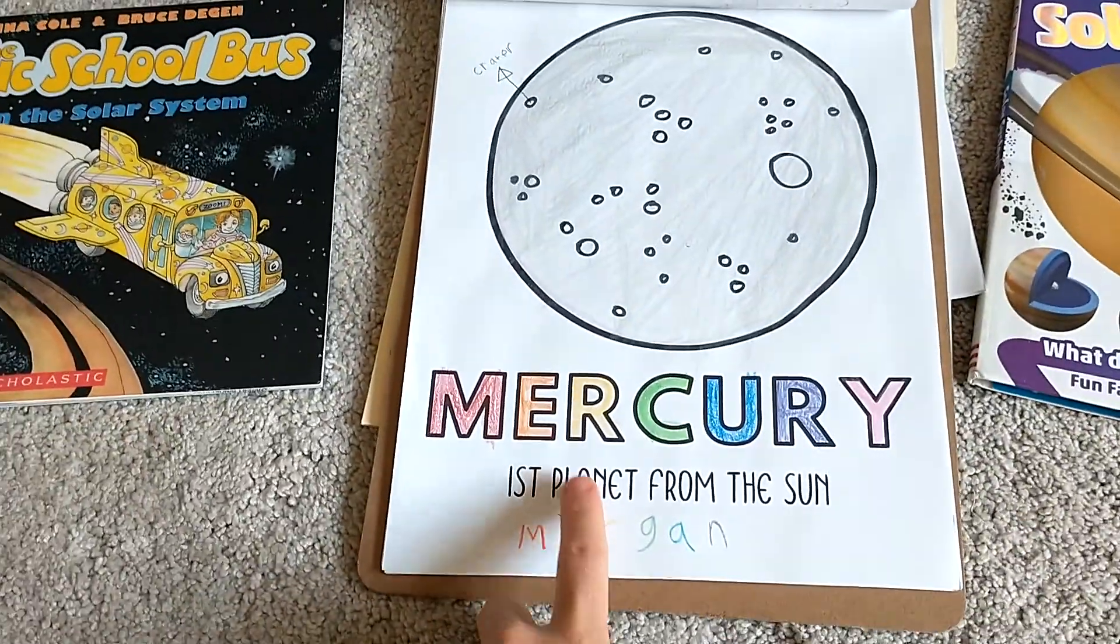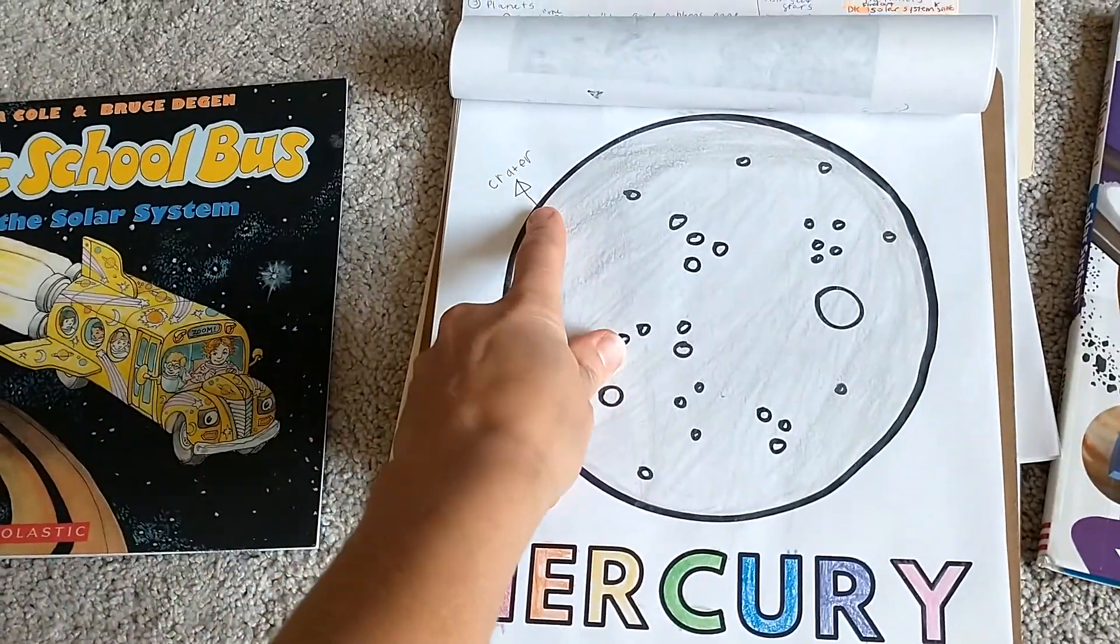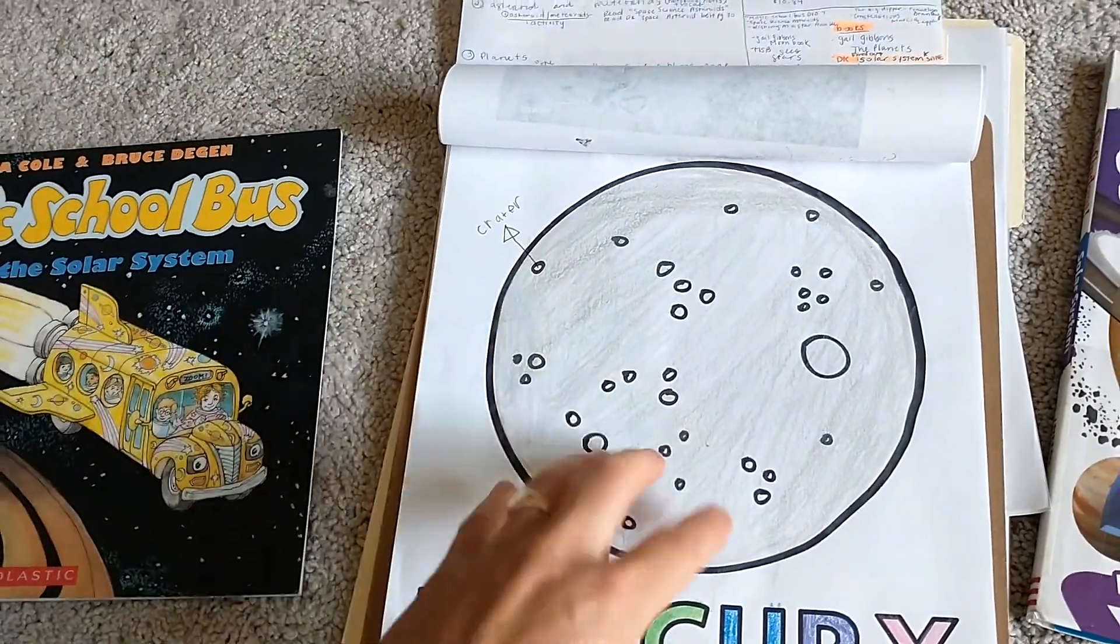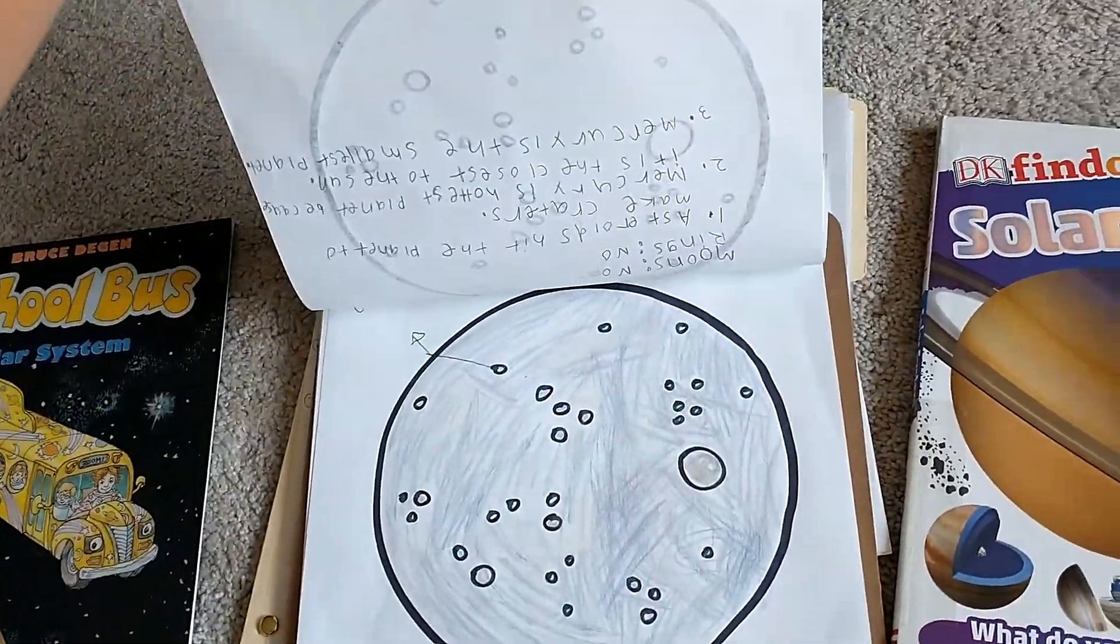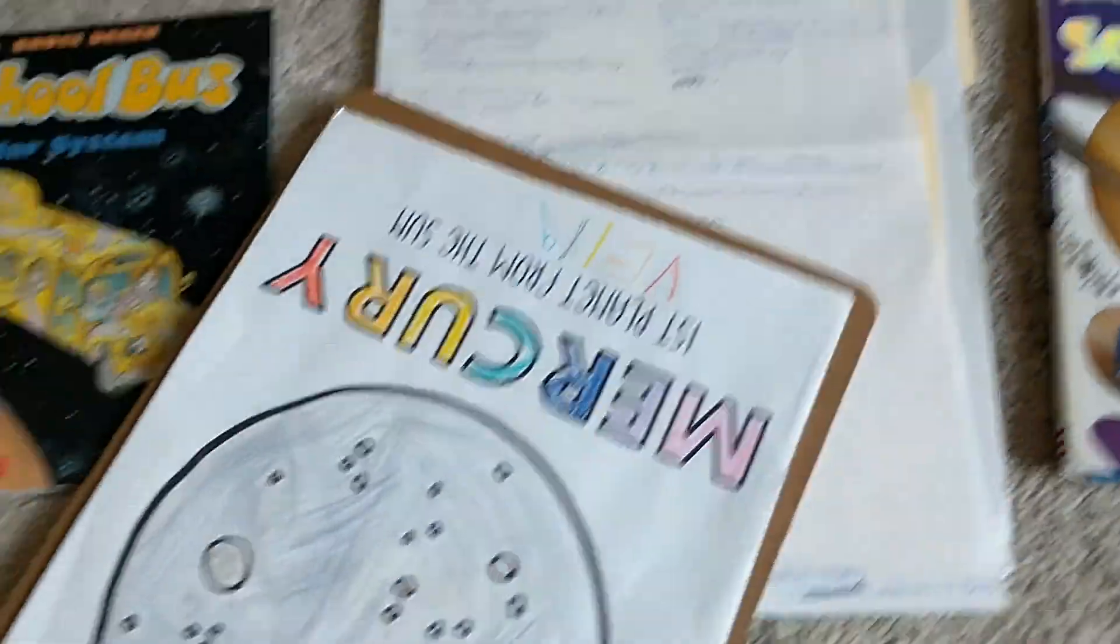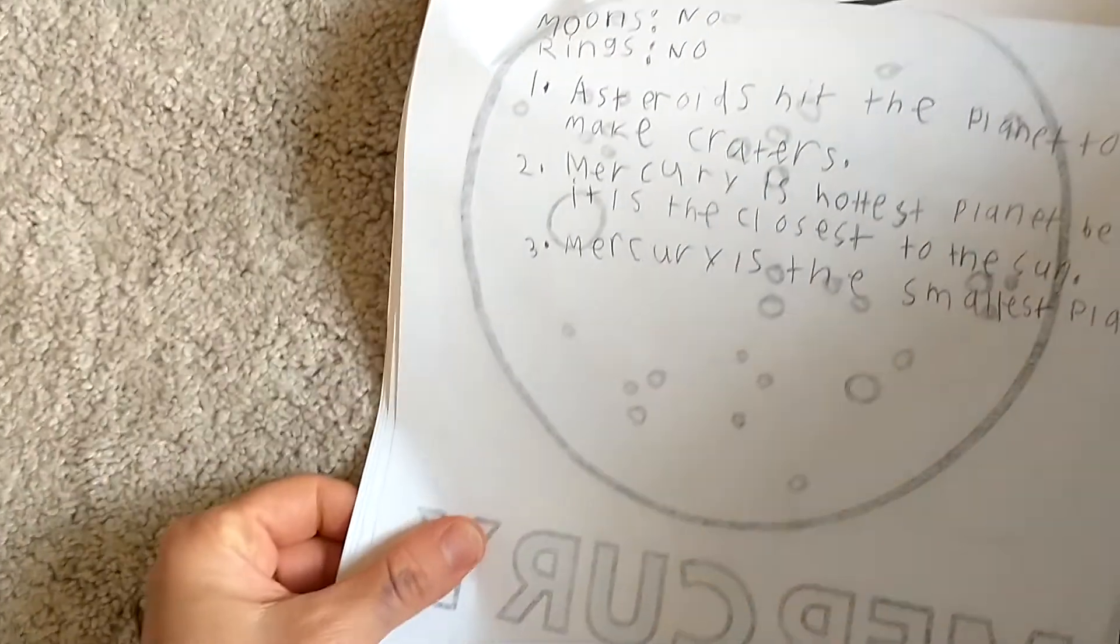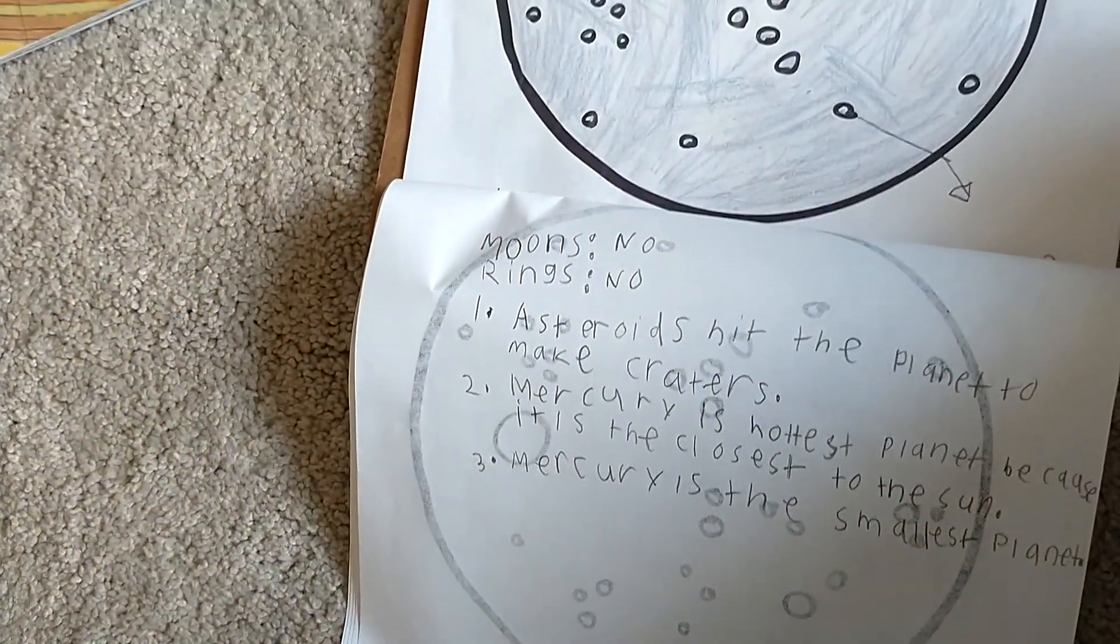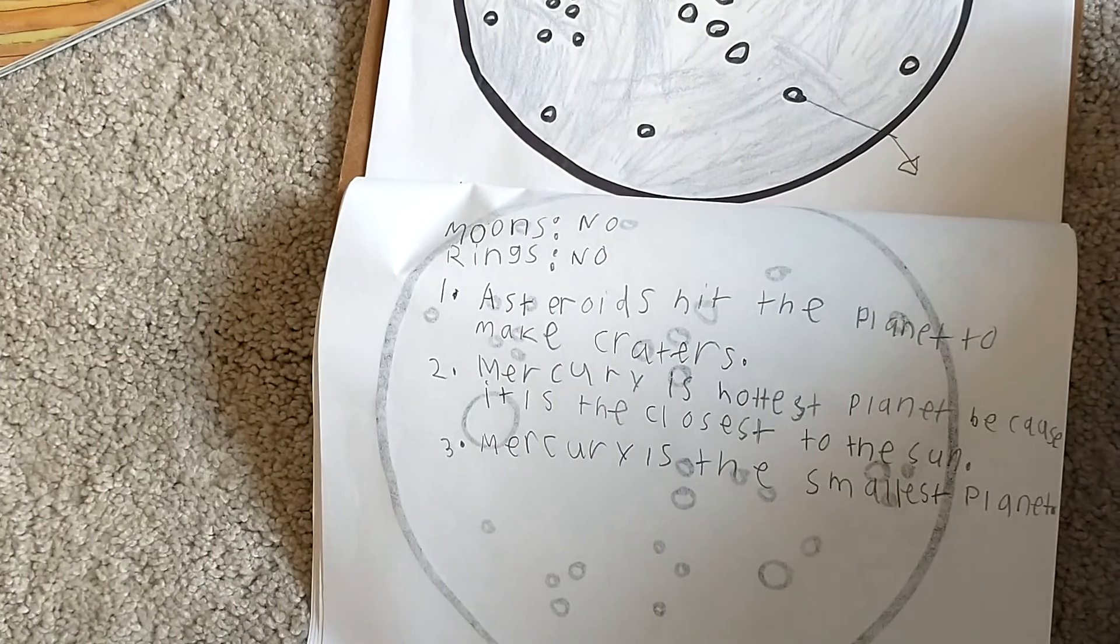We'd color in our page. We talked a lot about craters. So they marked off a crater. And then we did our notes on the back. So what we did for our notes is we wrote, you can't see at the top,